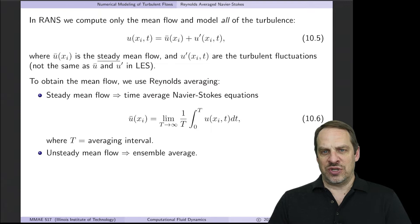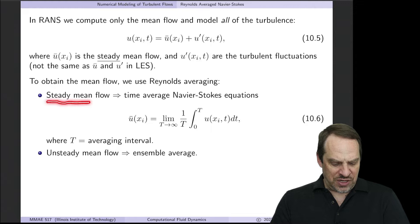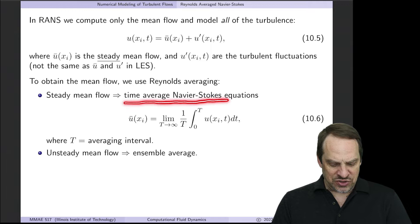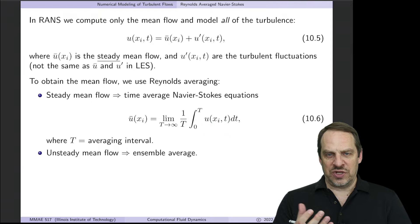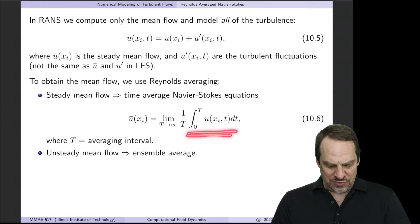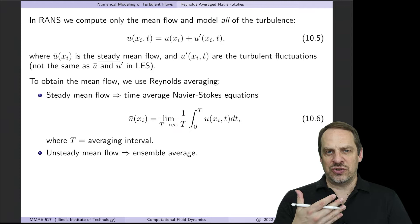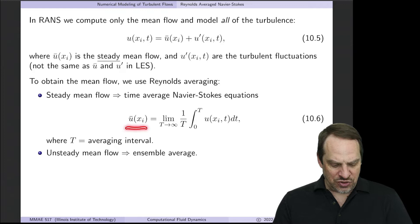So the way we start is we Reynolds average the Navier-Stokes equations, thus the name RANS, Reynolds-averaged Navier-Stokes. If we have a steady mean flow, we time average the Navier-Stokes equations. You integrate over some time window zero to capital T, divide by capital T, and as T goes to infinity, that gives you a long-time average of the entire flow field.